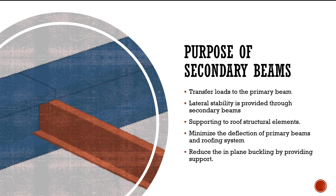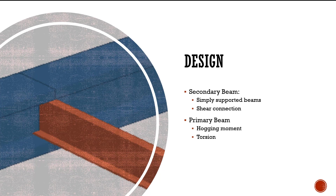In design, secondary beams are most often used to transfer loads to the main beams. The purpose is also to reduce the burden on the main beam and transfer loads appropriately to the main beam without increasing the impact on the main beam design.